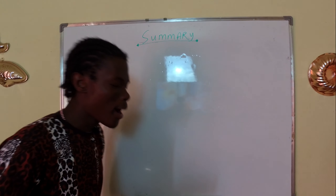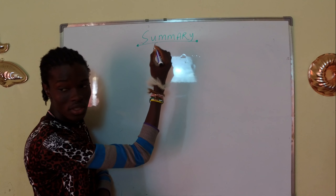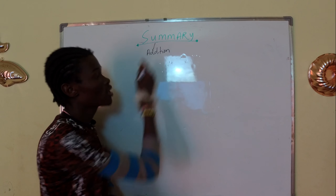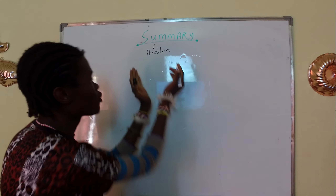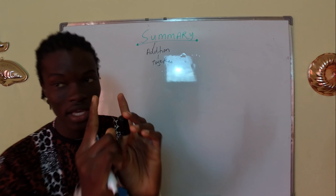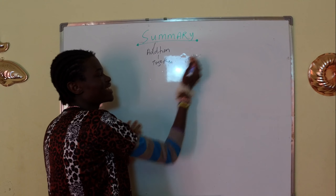So we're gonna be dealing with summary today. What is a summary? In mathematics, there's a term called sum — the sum of two terms, the sum of whatever. Sum comes from the word addition. When we say we are summing something up, it means we are putting things together, we are adding things together. Meaning that a summary is an addition of facts.